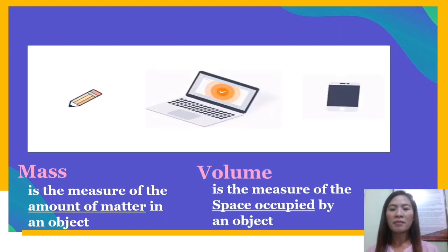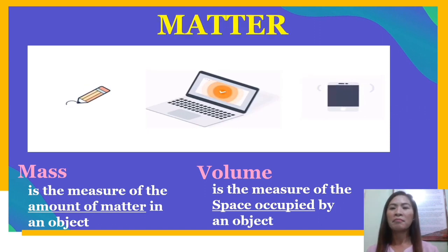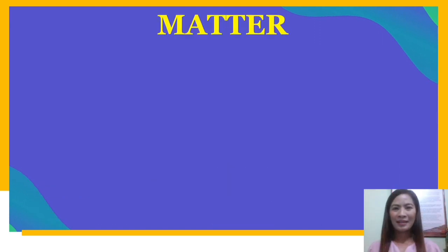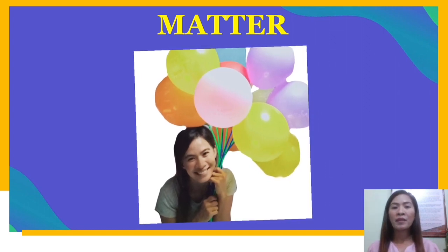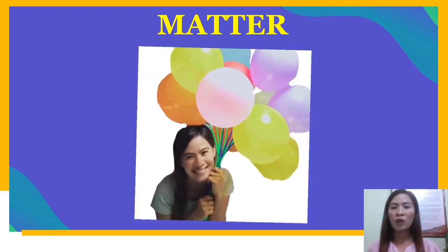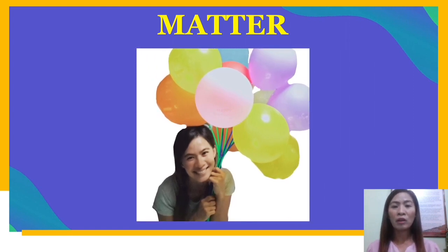These objects show that they occupy space, and it is called volume. Volume is the measure of the space occupied by an object. So, what do we call these objects that have mass and volume? We call them matter. How about the air inside the balloon? The air placed inside the balloon occupies space — we are able to inflate balloons. Air also adds mass to balloons. Hence, air inside balloons is considered as matter.